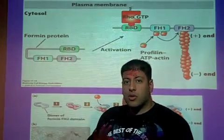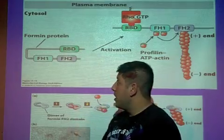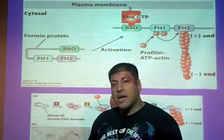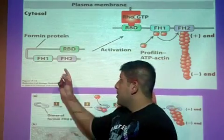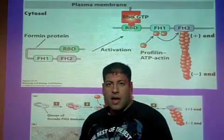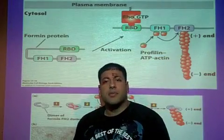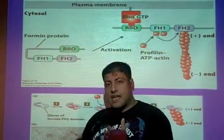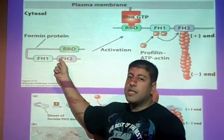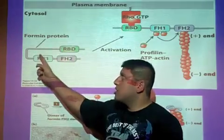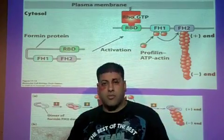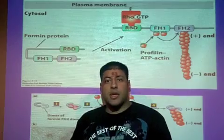Formin has three distinct domains: the RBD (rho-binding domain), the FH1, and the FH2. FH simply stands for formin homology. In the inactive state, the RBD is interacting with the FH2, which causes this protein to fold up on itself, rendering it inactive.